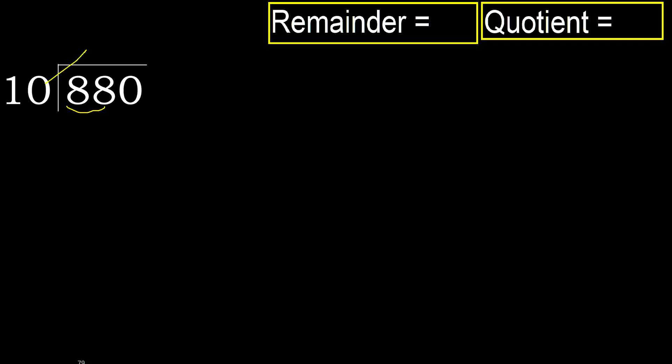10 multiplied by which number is nearest? 88, but not greater. 10 multiplied by 9 — 90 is greater. 880 is not greater, okay.